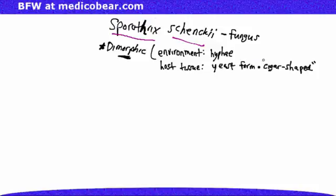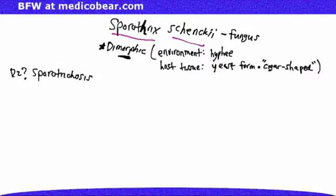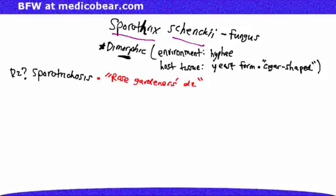Examiners note a cigar-shaped yeast — a unique description. The disease that Sporothrix causes is sporotrichosis, commonly referred to as rose gardener's disease, because it exists on vegetation and plant life and is introduced into the host by trauma to the skin. It's frequently seen in gardeners, florists, and people frequently around these forms of vegetation.